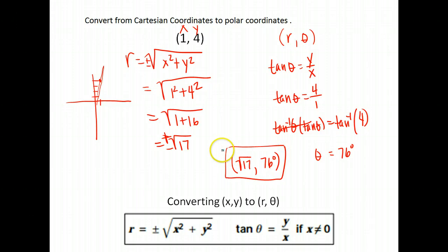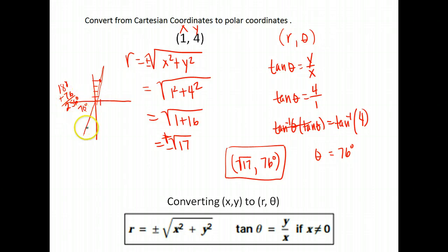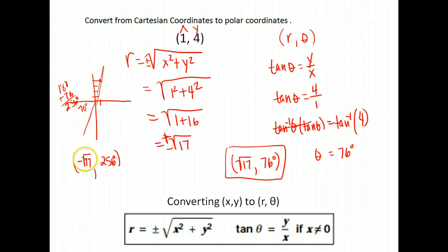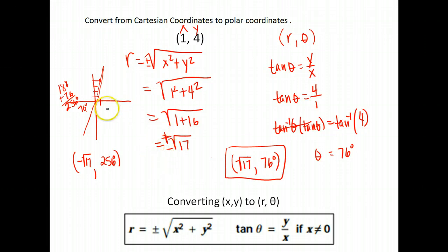There could be another possible answer. Remember that tangent is not only positive in quadrant 1 but also positive in quadrant 3. So I could find the angle that's 76 degrees away from my axis in quadrant 3 by going 180 + 76, which gives 256°. That's in the wrong quadrant, but with polar coordinates I can use the 256° angle and instead of going a positive √17 ending up here, I go a negative √17 and end up in the first quadrant. So both (√17, 76°) and (−√17, 256°) are possible correct answers.